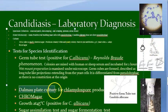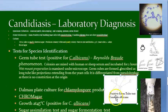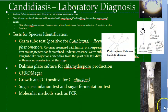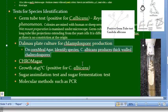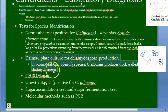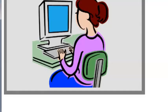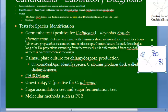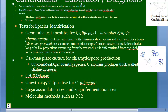Next is Dalmo plate culture for chlamydospore production. On cornmeal agar you can identify the species because Candida albicans produces thick-walled chlamydospores. There is a diagram showing these thick-walled chlamydospores on cornmeal agar. Just remember: thick-walled chlamydospores are produced by Candida albicans on cornmeal agar.